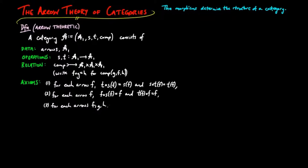For each arrows F, G and H, if FG equals H, then the source of H is equal to the source of G, the target of H is equal to the target of F, and the target of G is equal to the source of F.